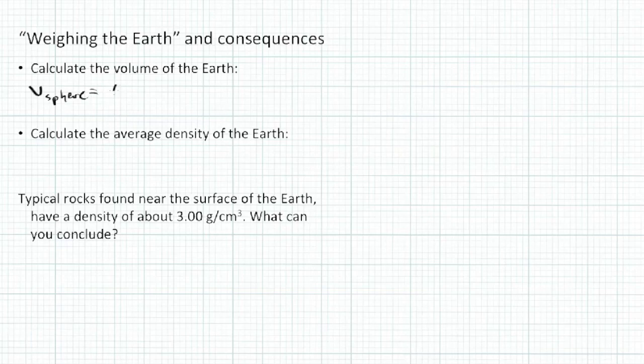Anybody remember? Should be four thirds pi r, not squared but cubed. Pi r cubed. So that would be four thirds, I would write that in my calculator in parentheses, times pi times our radius of the earth, or simply r cubed. And that gives us a volume of the earth of 1.09 times 10 to the 21st cubic meters.